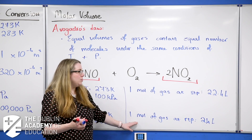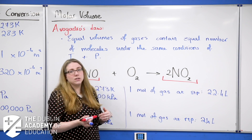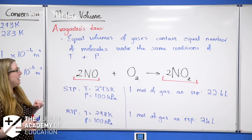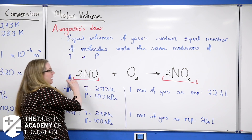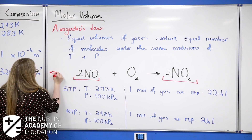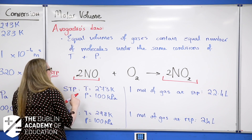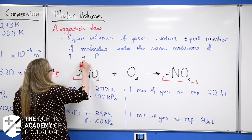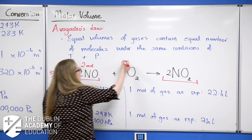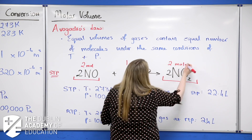If I had two moles of gas at RTP that would occupy 48 litres, because if one mole is 24 litres, two moles would be twice as big. Now, if this reaction is happening at STP, with 2 moles of nitrogen monoxide reacting with 1 mole of oxygen to form 2 moles of nitrogen dioxide, we can work out the volume of each substance at STP.